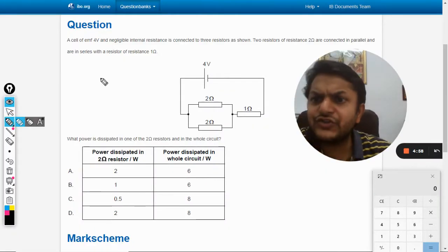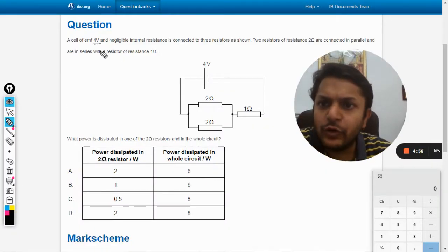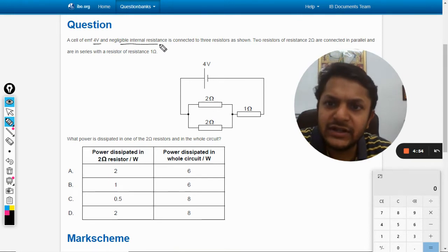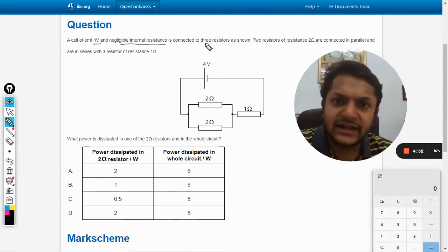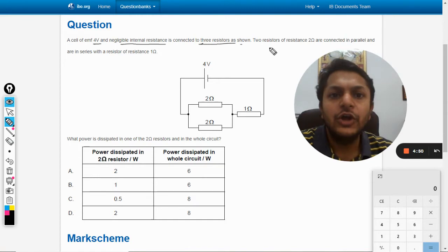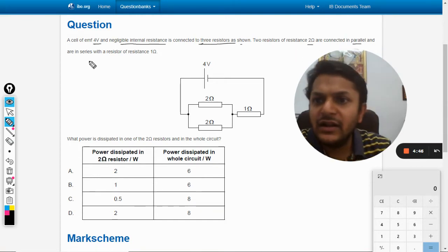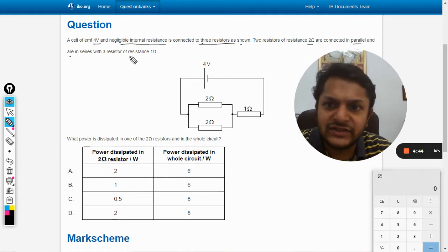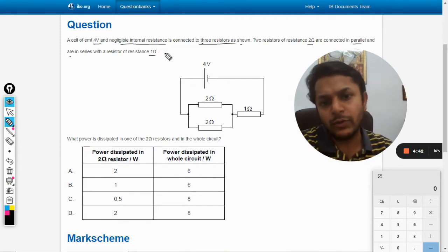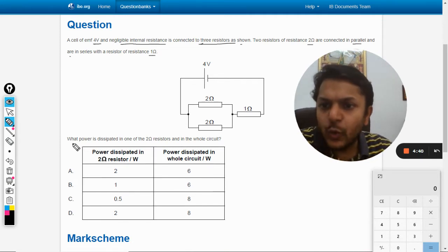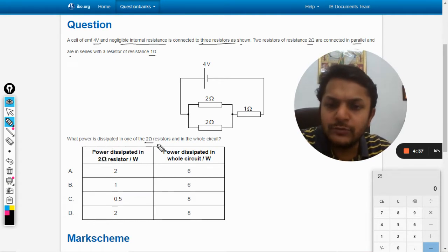Okay, so in this question a cell of EMF 4 volt and negligible internal resistance is connected to three resistors as shown. Two resistors of resistance 2 ohm are connected in parallel and are in series with the resistor of resistance 1 ohm. As shown in the diagram, what power is dissipated in one of the 2 ohm resistors and in the whole circuit?